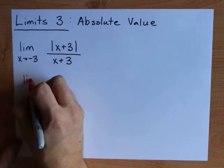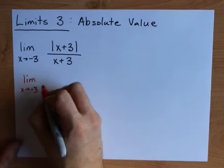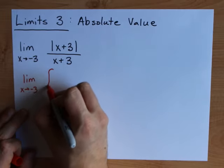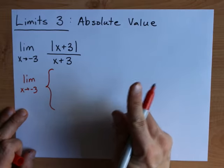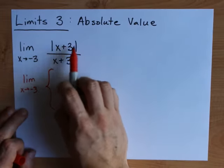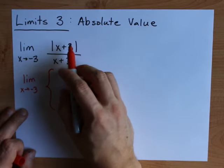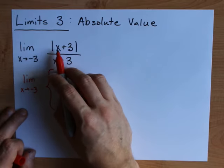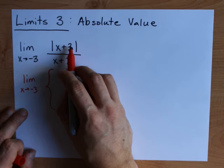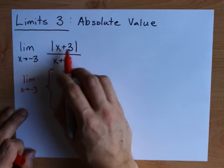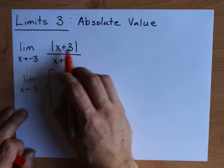The very first thing I always do when I see absolute value bars is to break it up into two sections. Here's what I mean. Where would this flip from negative to positive? Well, ignoring the absolute value bars, the inside would flip at negative three.